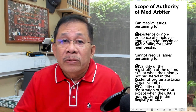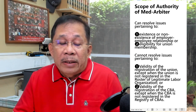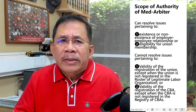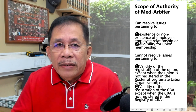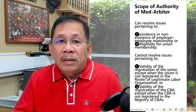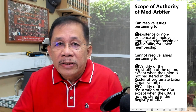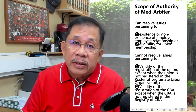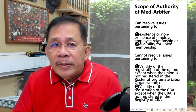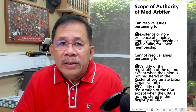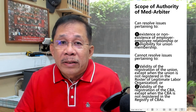The authority of the med-arbiter is limited to determining whether the petition for certification election should be granted or not. The med-arbiter can resolve issues pertaining to the existence or non-existence of employer-employee relationship, or eligibility for union membership. However, the med-arbiter cannot resolve issues pertaining to the validity of the registration of the union, except when the union is not registered in the roster of legitimate labor organizations. The med-arbiter also cannot rule on the validity of a CBA, except when the CBA is not registered in the registry of CBAs.